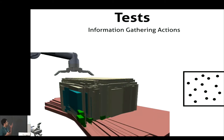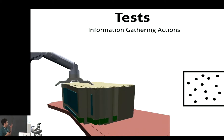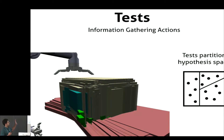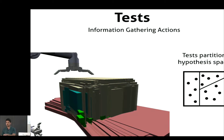If you were to execute the same guarded move and get a different observation, you might have a different set of hypotheses. Overall, a test is basically going to take your set of hypotheses and partition your space, where a subset corresponds to different observations. Each of those partitions is a different observation for this one test.